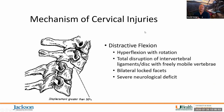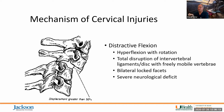Distractive flexion is very similar, except this is where one of the occupants turned away just before impact. That rotation puts them into a situation where they end up with locked facets. You still have total disruption of the three-column spine, but now you're in a locked facet scenario, requiring significant distraction to unlock those facets. Again, this is associated with severe neurological deficits.